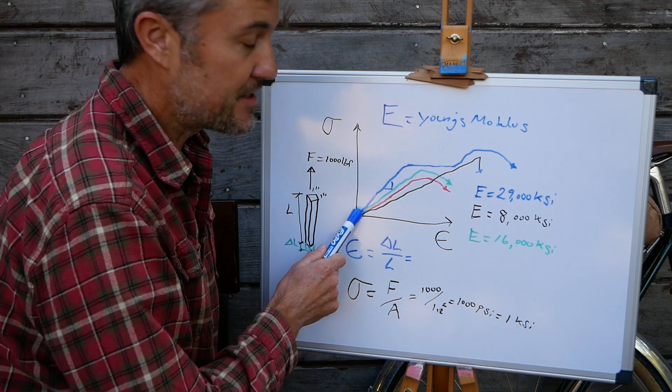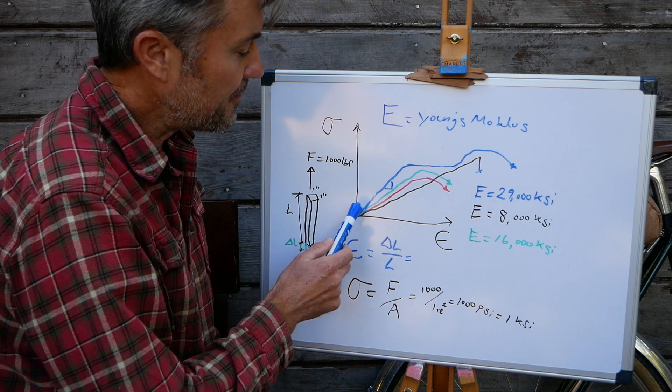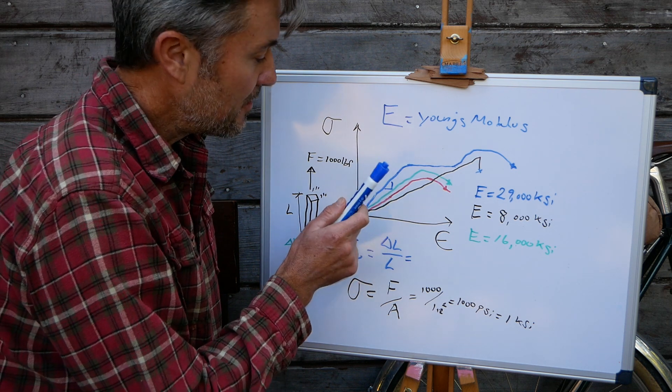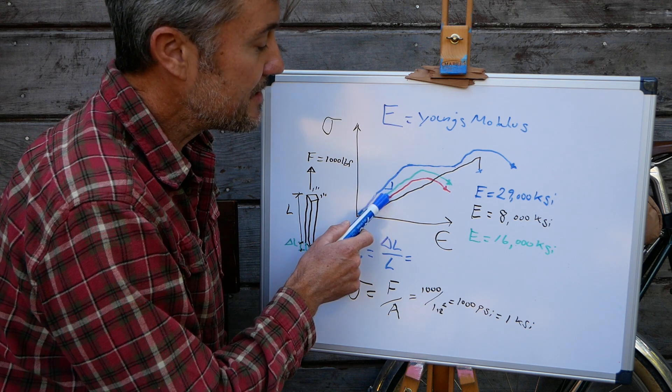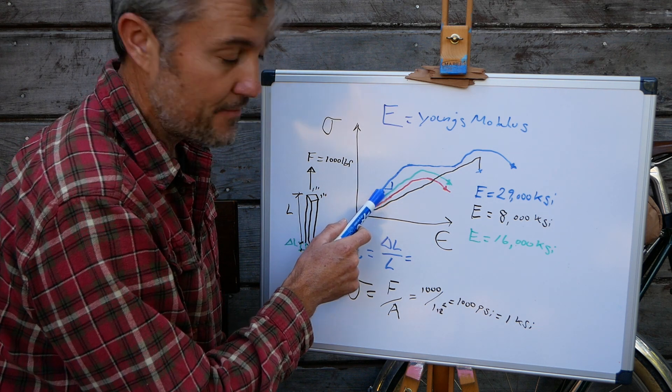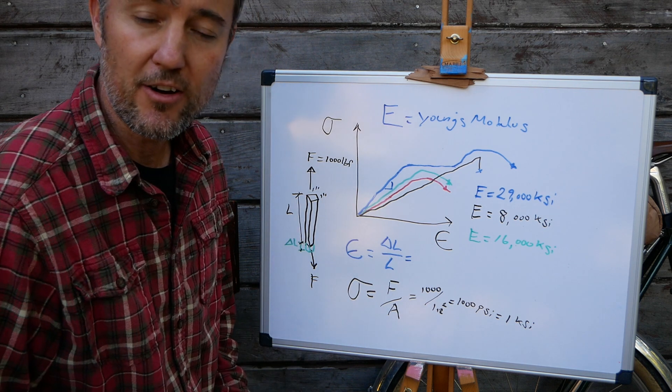Blue is going to represent steel. Green is going to represent titanium. Red is going to represent aluminum and black is going to represent carbon fiber.